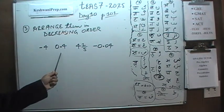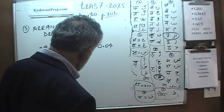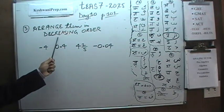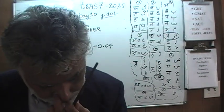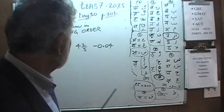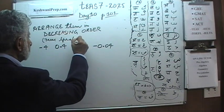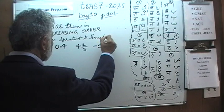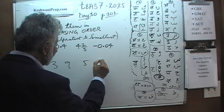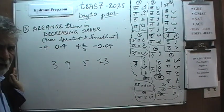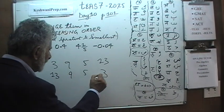Problem number 3, as you can see already, is already on the blackboard. We are being asked to arrange these four quantities in decreasing order. Decreasing order means from greatest to the smallest. For example, if we were asked to compare 3, 9, 5 and 13, and arrange them in decreasing order, we start from the biggest one and keep on decreasing: 9, 5 and 3. That's decreasing order.